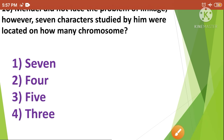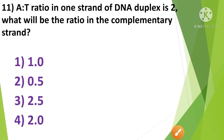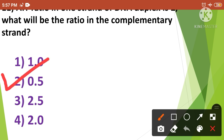Next question: The adenine to thymine (A/T) ratio in one strand of a DNA duplex is 2. What will be the ratio in the complementary strand? 1st option 1.0, 2nd option 0.5, 3rd option 2.5, and 4th option 2.0. The correct answer is option 2nd — the ratio in the complementary strand will be 0.5.